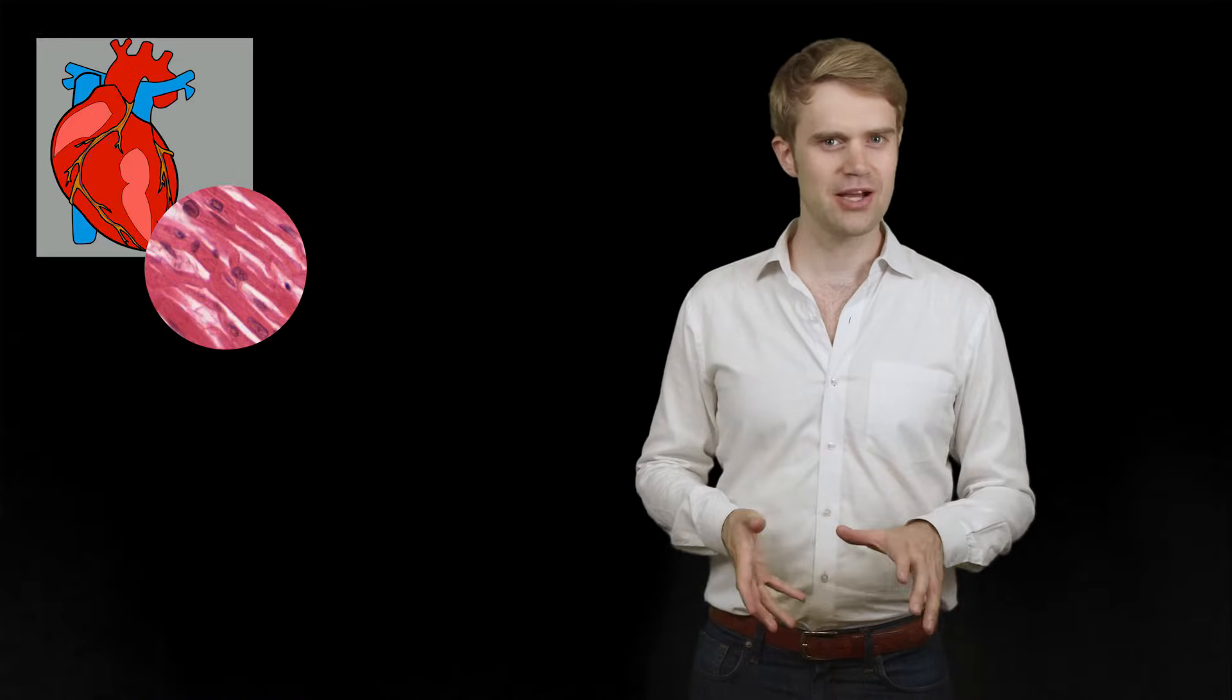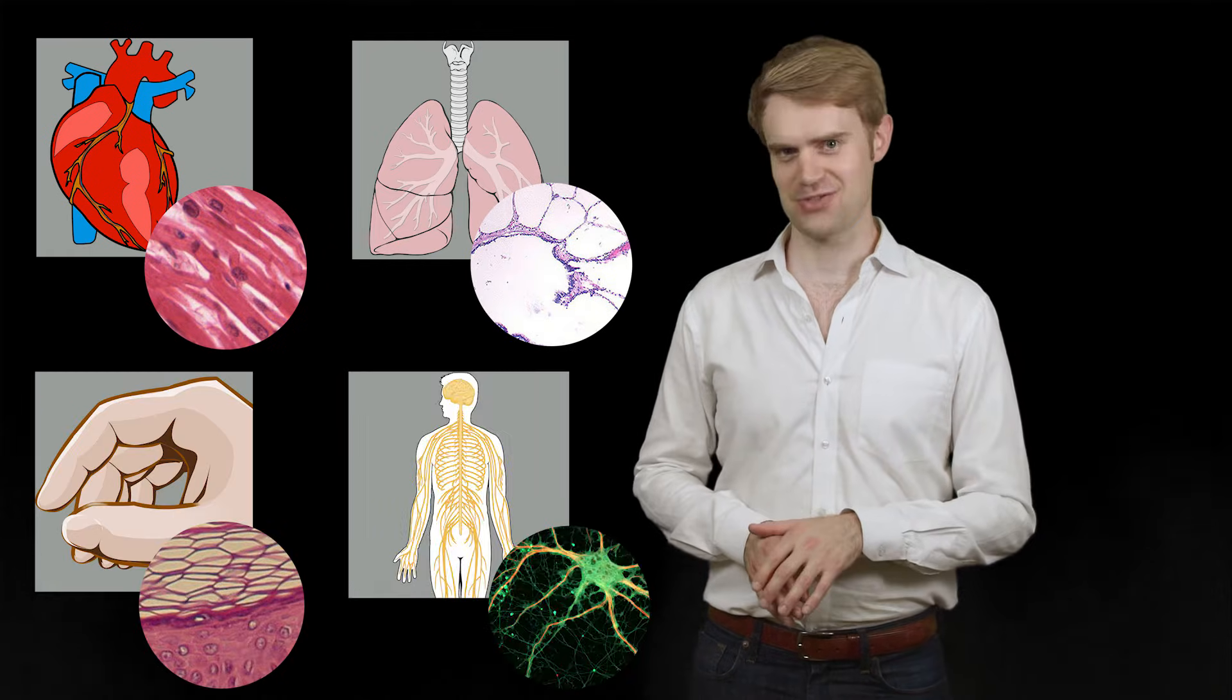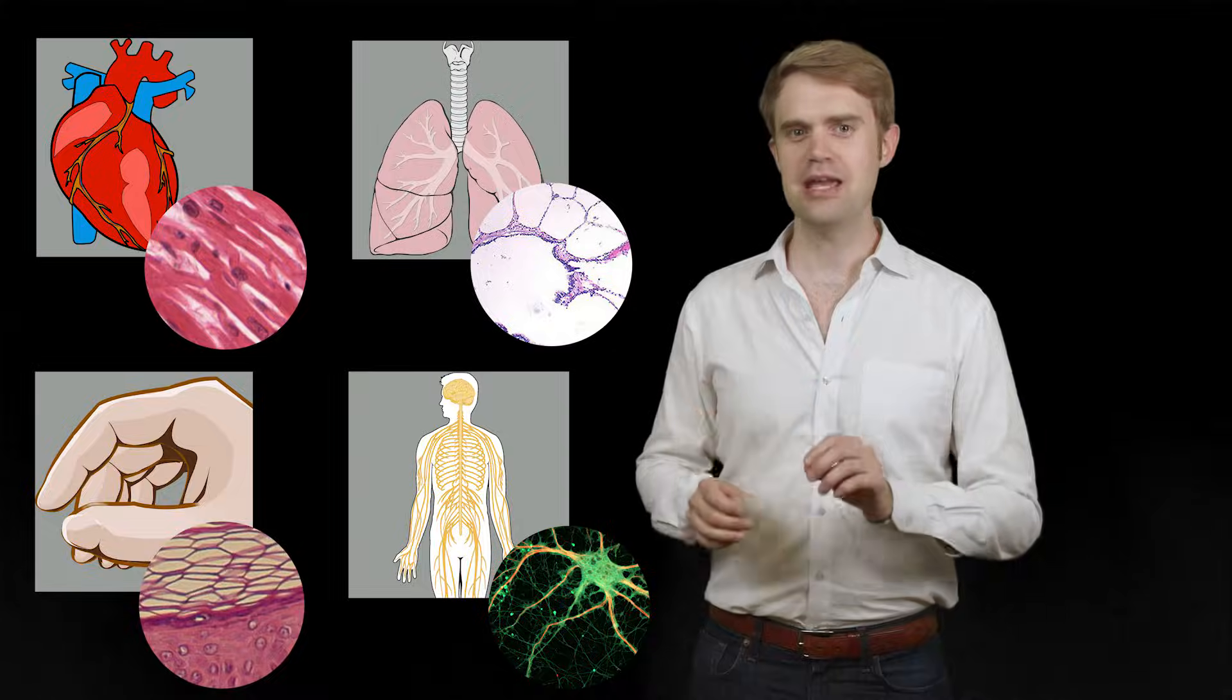Almost everything in your body is made of cells. Your heart is made of cells, and your lungs, and your skin, and your nerves. Your body is made up of about 40 trillion cells.